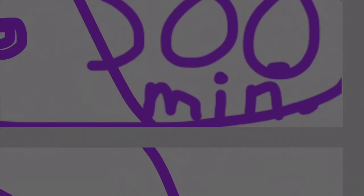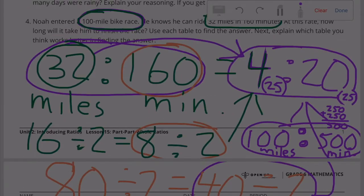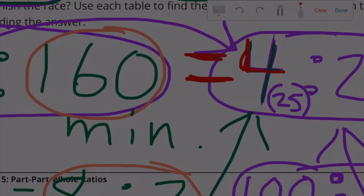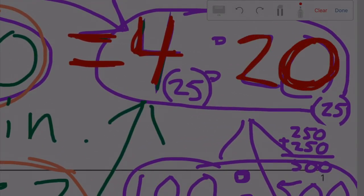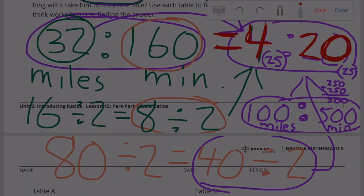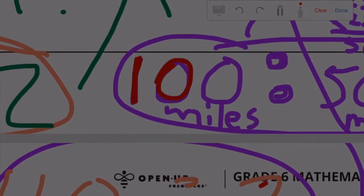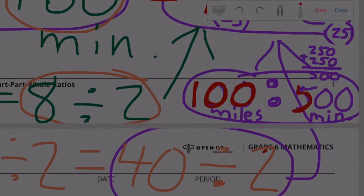So my answer is right down here - 100 miles in 500 minutes. Noah entered a 100 mile bike race. He can travel 32 miles in 160 minutes, which is the same thing as traveling 4 miles in 20 minutes. And 4 miles in 20 minutes is the same thing as traveling 100 miles in 500 minutes.